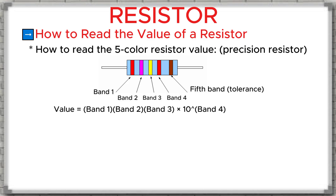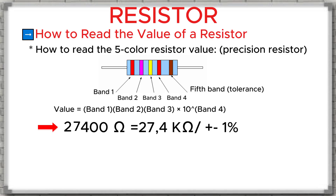So, for the resistor in this example: band one is red equals 2, band two is violet equals 7, band three is yellow equals 4, band four is red equals 2, meaning we add two zeros. The last band is brown, which means the tolerance is 1%. Putting it all together, the resistor value is 27,400 ohms, or 27.4 kilo-ohms, with a 1% tolerance.